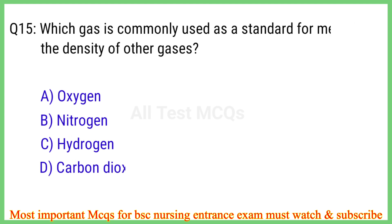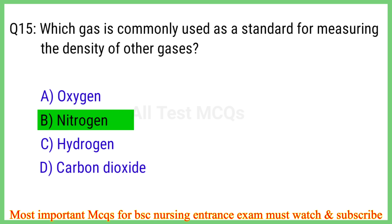Q15. Which gas is commonly used as a standard for measuring the density of other gases? The right answer is option B: Nitrogen.